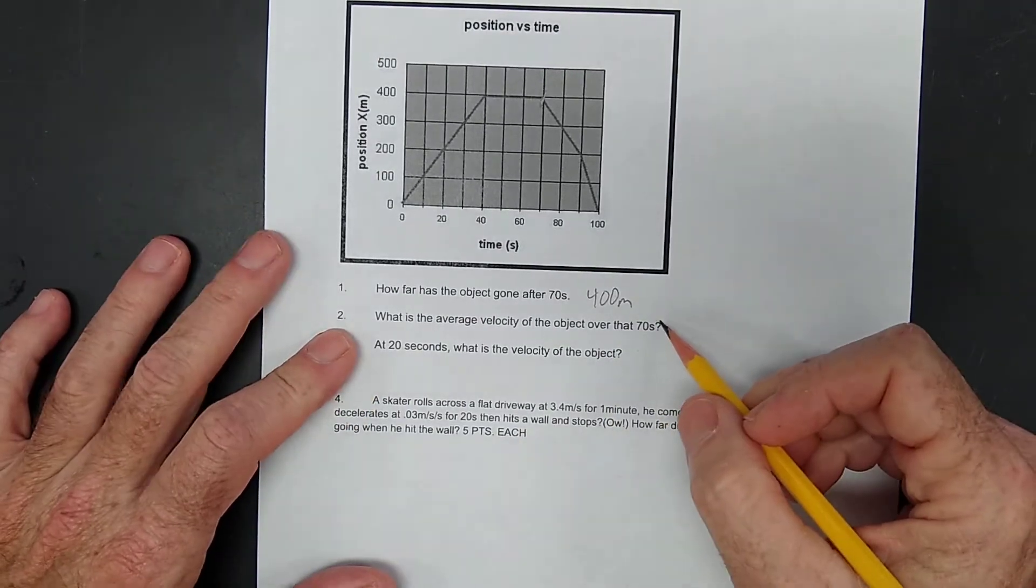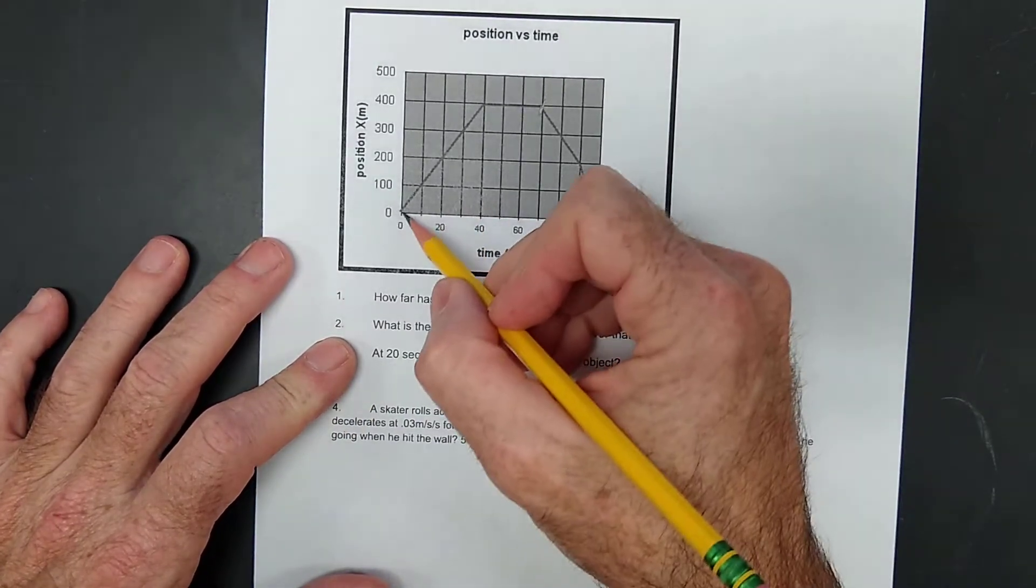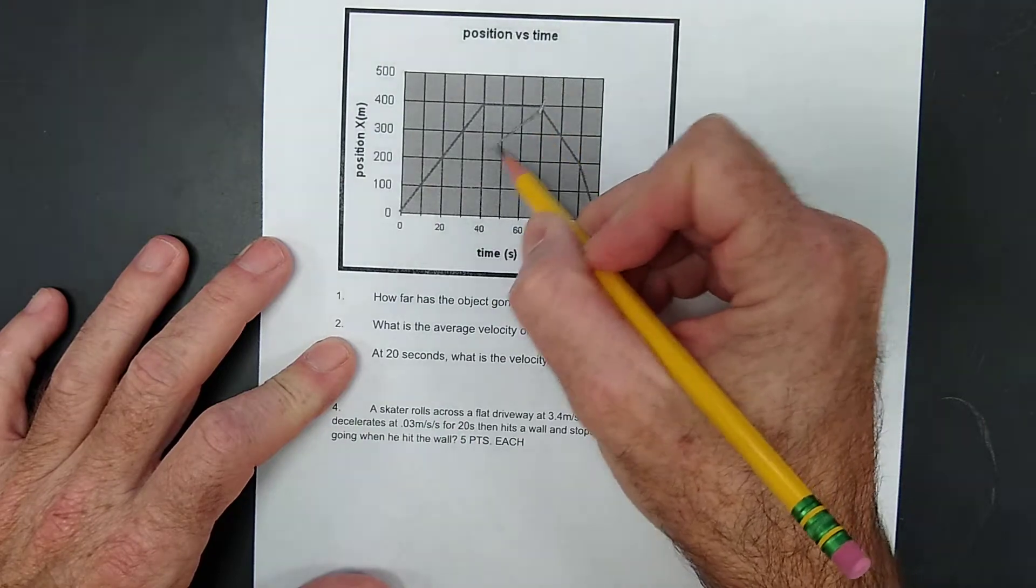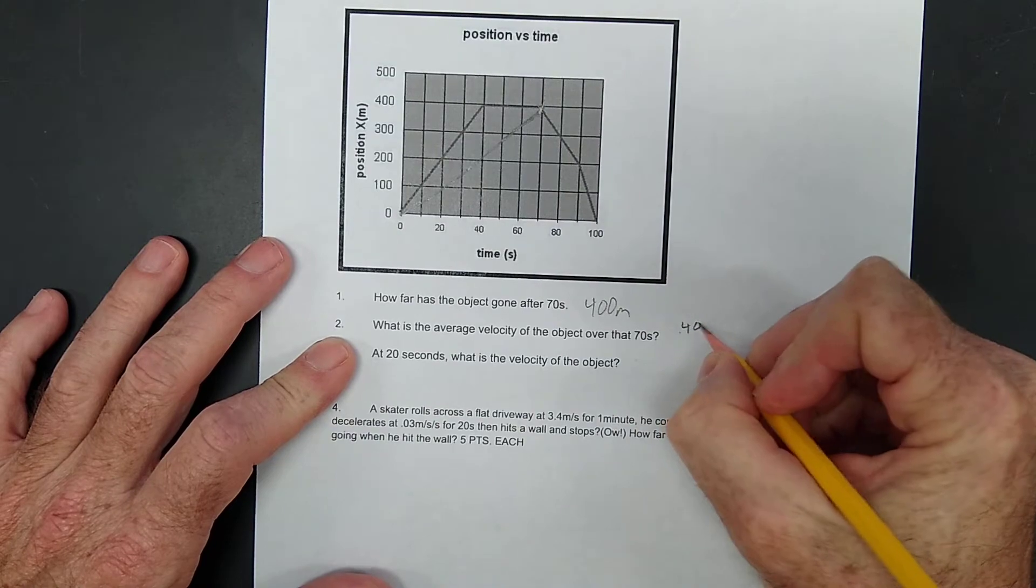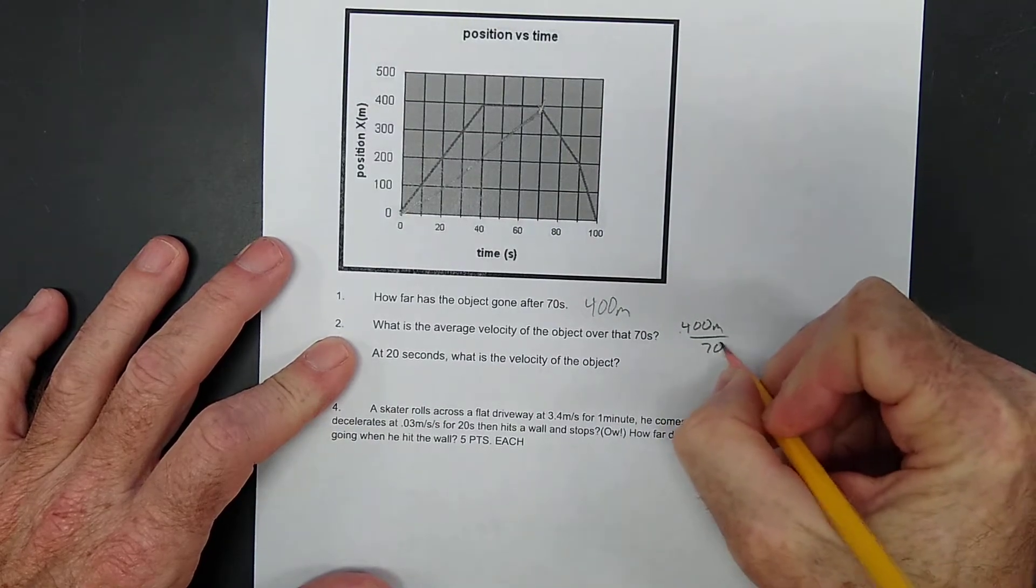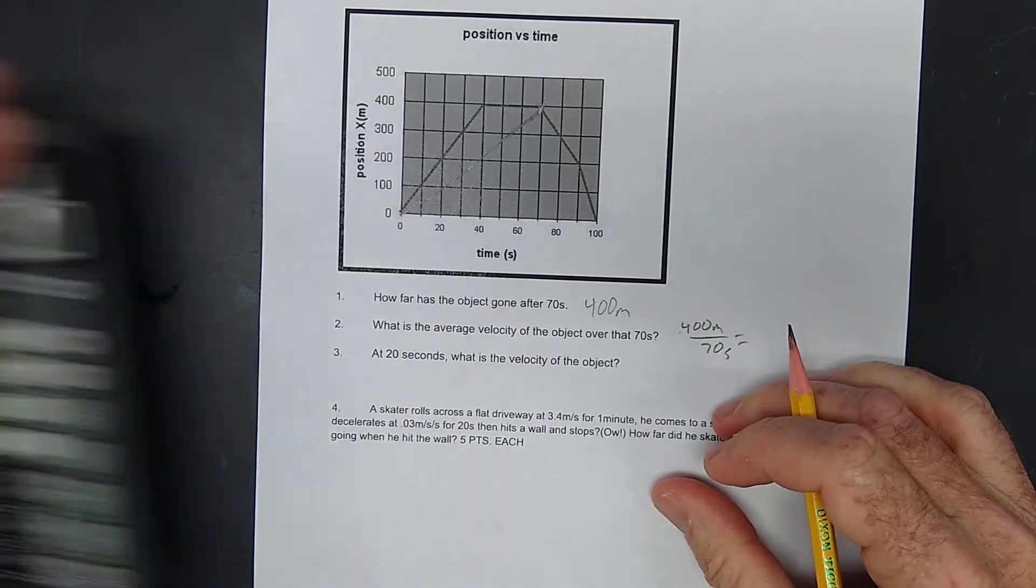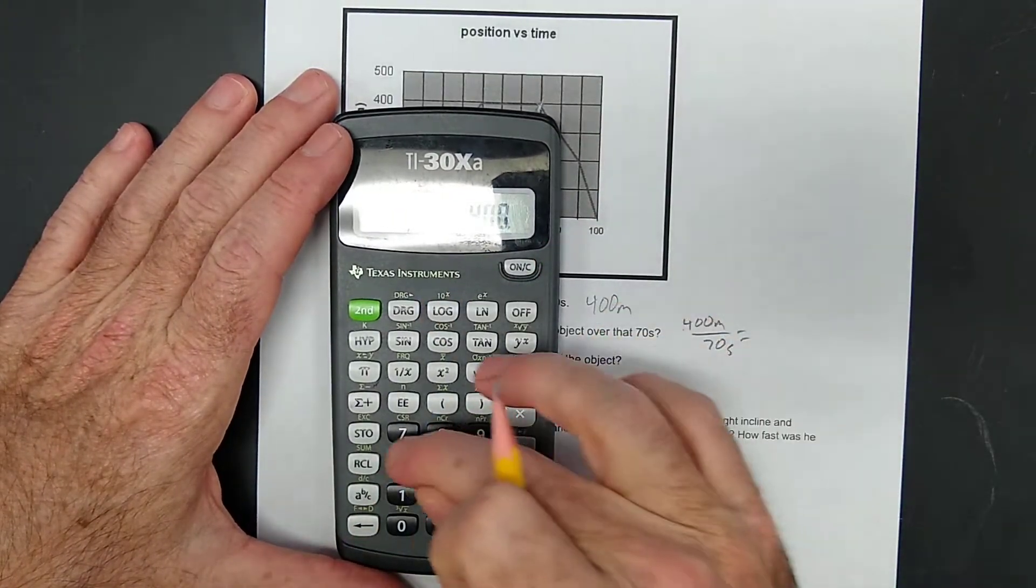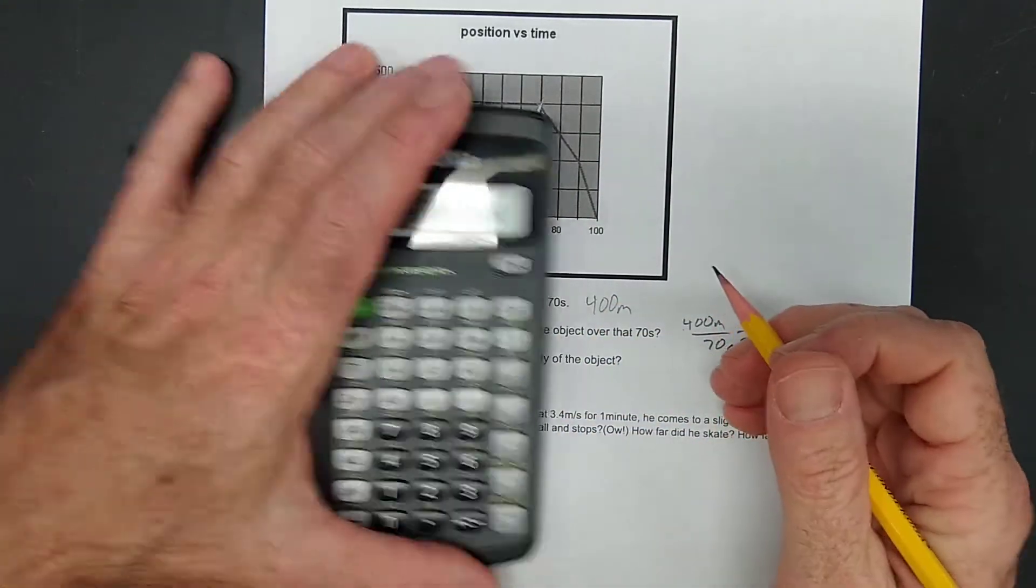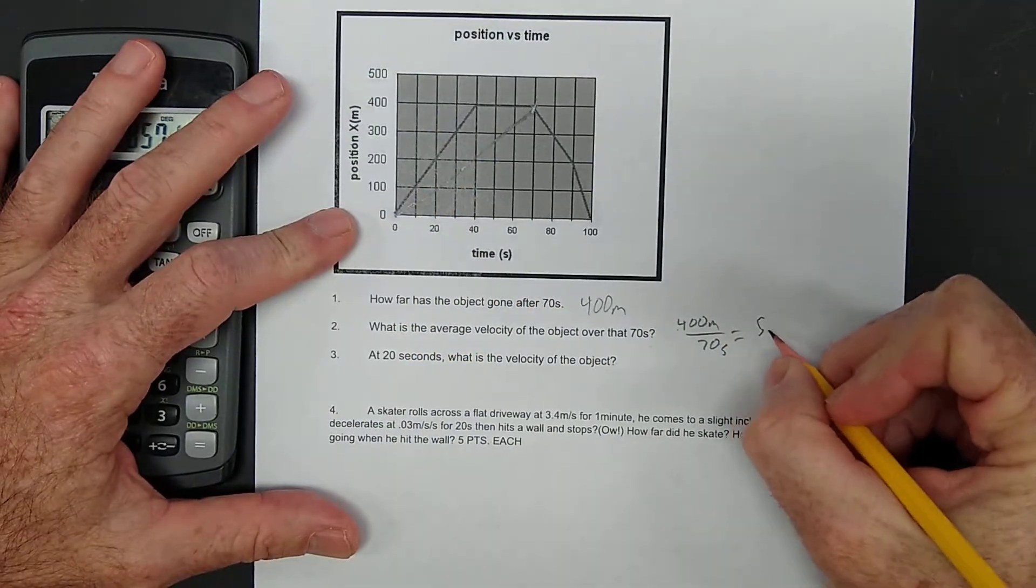What's the average velocity over that 70 seconds? Well, if you want to average, you could just pretend the line looks like that. You can say we went 400 meters in 70 seconds. And that's how you can calculate the average velocity. 5.7 meters per second.